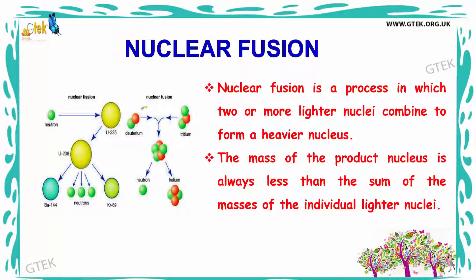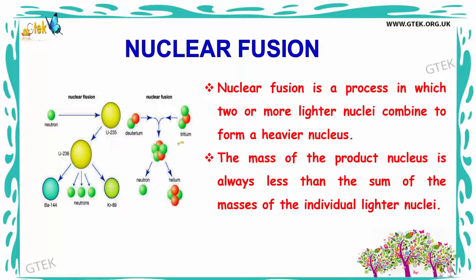The picture on the left side shows nuclear fusion. You can see that deuterium and tritium are getting combined to form a compound, which then gets divided to form a neutron and a helium.